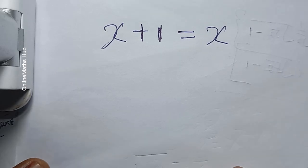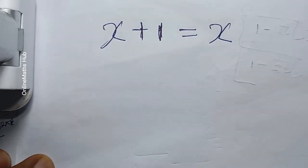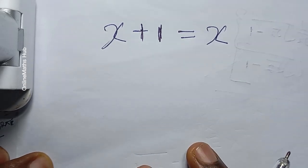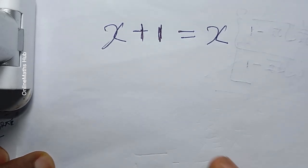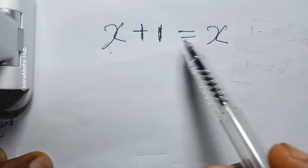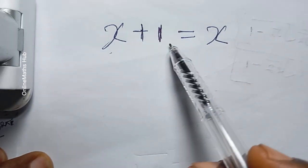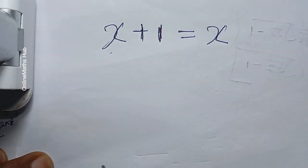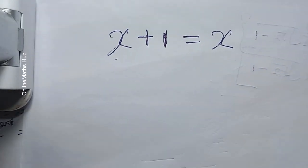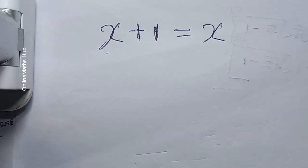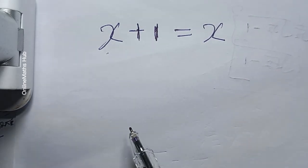If you want to solve this question, how would you approach it? The question is kind of weird. What we have is x plus 1 is equal to x. So which value of x is actually going to satisfy this?